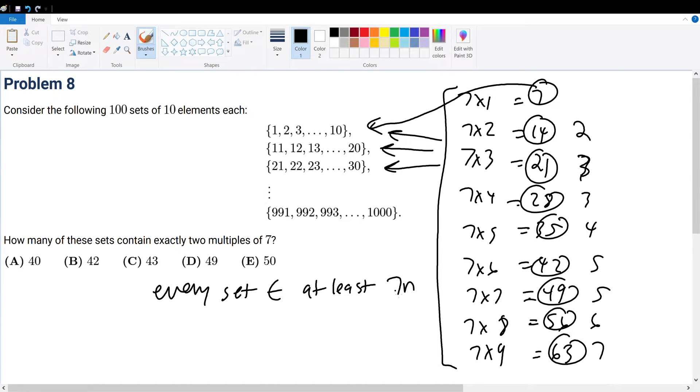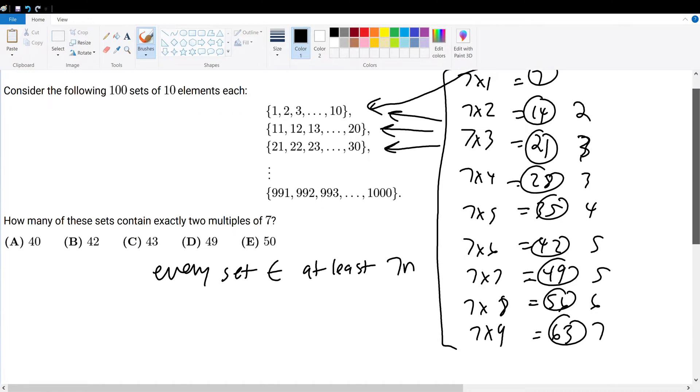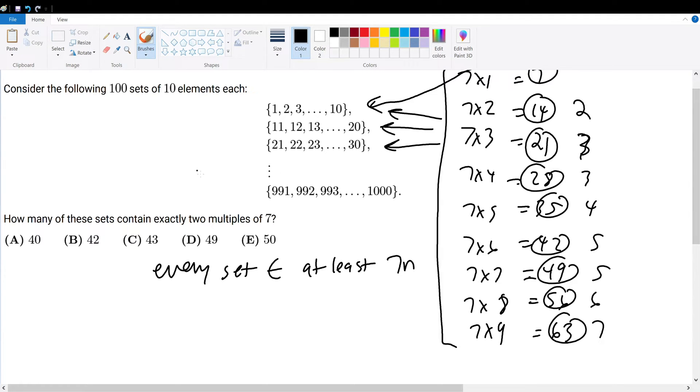So if every one must have at least multiple of 7, then how many multiples of 7 do we have from the range of 1 to 1,000? Well, from 1 to 1,000, we have 7 times 1 all the way to 7 times n, but 7 times n must be less than 1,000. In other words, n must be less than 1,000 divided by 7, where n is an integer.